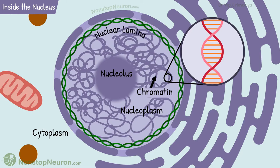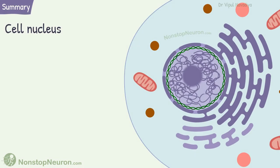Finally the nuclear lamina. It is a fibrillar protein skeleton near the inner nuclear membrane. It provides structural support to the nuclear membrane. This was all about the structure of the nucleus.